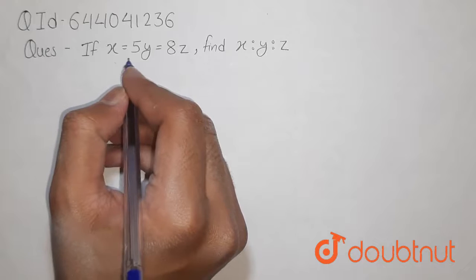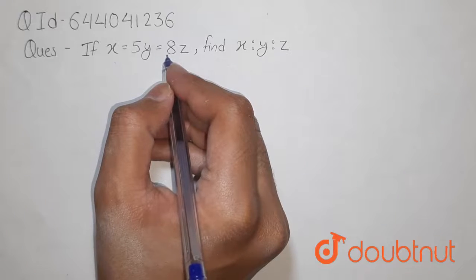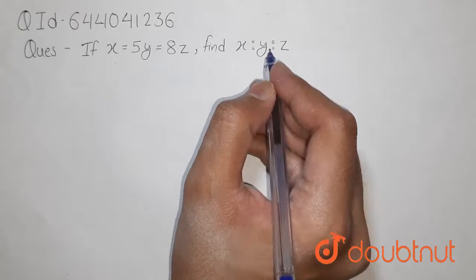Question is, if x is equals to 5y is equals to 8z, we have to find the ratio of x ratio y ratio z.